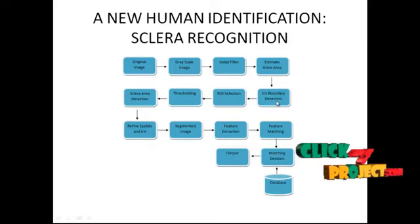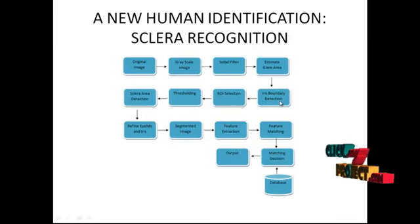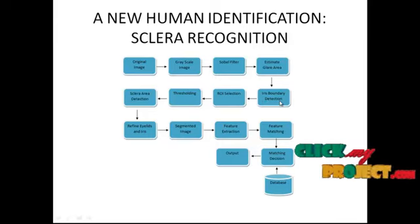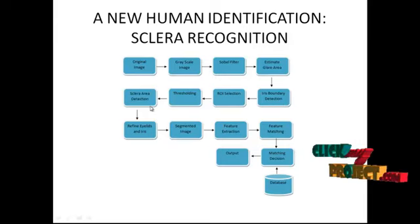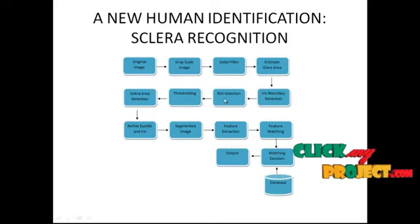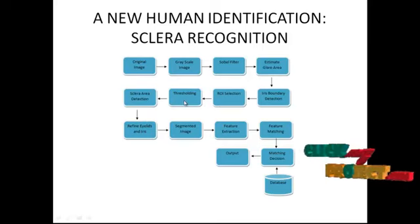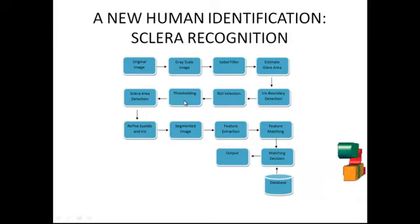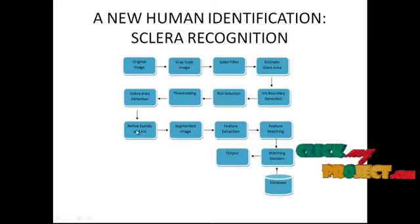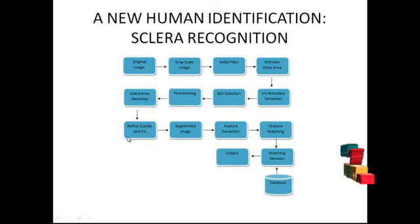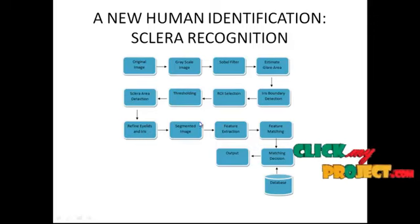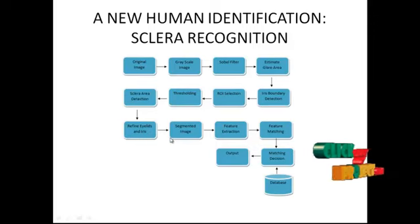In iris boundary detection, a greedy angular search method is used. The process of sclera area detection includes ROI selection and a thresholding step based on Otsu's method. The detected sclera is refined by refining the eyelids and the iris, giving us the perfected segmented image.